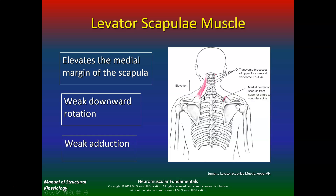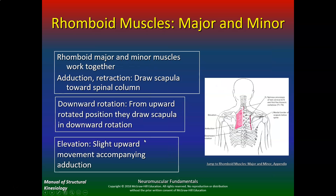Don't worry too much about origin and insertion but you still need to know them — I'm more concerned about the actions. The rhomboid muscles work together: adduction/retraction draws the scapula toward the spinal column. Downward rotation from an upward rotated position draws the scapula in. Elevation is a slight upward movement accompanying adduction. Make sure you know what actions the rhomboids have on the scapula.